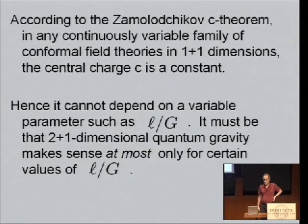According to the Zamolodchikov C theorem, in any continuously variable family of conformal field theories in 1 plus 1 dimensions, the central charge C is a constant. Hence, it cannot depend on a variable parameter such as L over G. It must be that 2 plus 1 dimensional quantum gravity makes sense, at most, only for certain values of L over G.